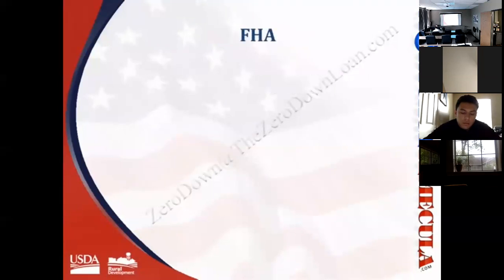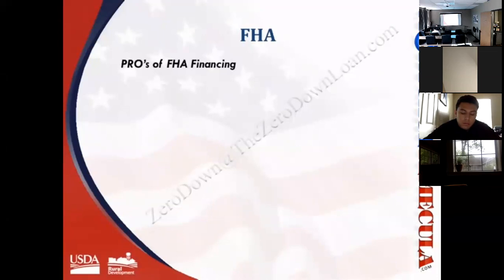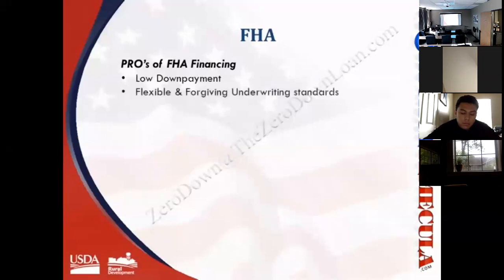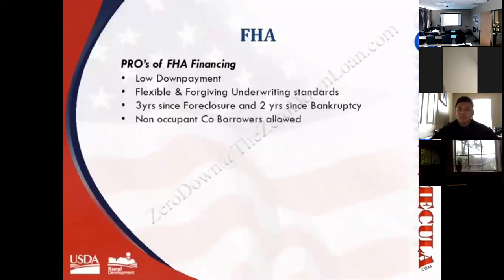Because FHA loans have the full backing of the U.S. government, they can tolerate more risk and allow lower down payments. The most common FHA mortgage is the FHA 203(b), which has a 30-year and a 15-year fixed loan option. The pros of FHA financing include lower down payments as low as 3.5%, allowing for 96.5% financing, and flexible, forgiving underwriting standards including two years from a bankruptcy discharge and three years from foreclosure.